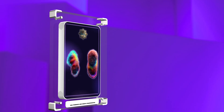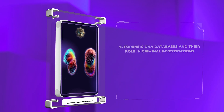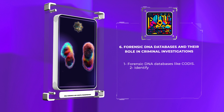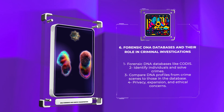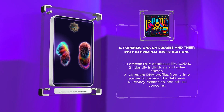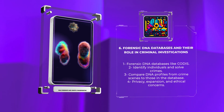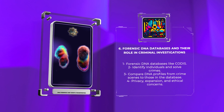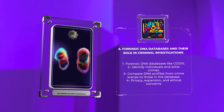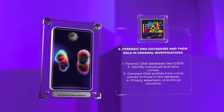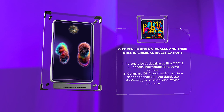Forensic DNA databases, like CODIS, help identify individuals and solve crimes by comparing DNA profiles from crime scenes to those in the database. Privacy, expansion, and ethical concerns are important considerations for these databases.